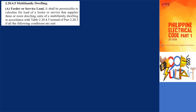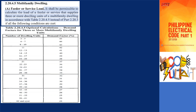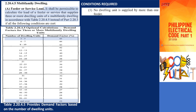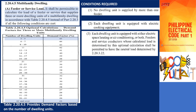For calculation of feeders and service load, subsection 2.20.4.5a for multifamily dwellings states that it shall be permissible to calculate the load of a feeder or service that supplies three or more dwelling units of a multifamily dwelling by table 2.20.4.5 instead of part 2.20.3, if the required conditions are met. The table provides the demand factor based on the total number of dwelling units; for example, for four units the demand factor is 45%, and if 62 or more units, it is 23%. To use this table, each dwelling unit must not be supplied by more than one feeder and must be equipped with cooking equipment and either an air conditioning unit or heat equipment.